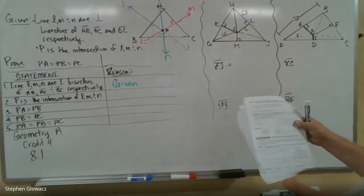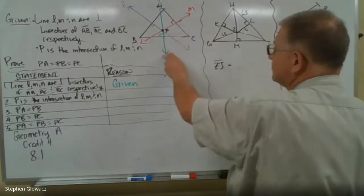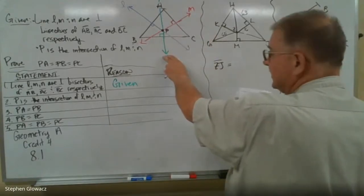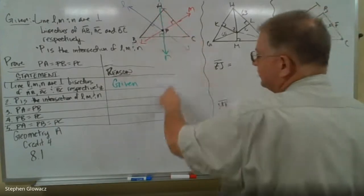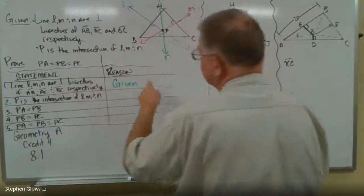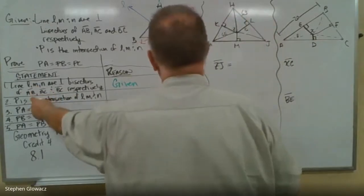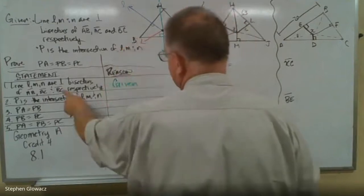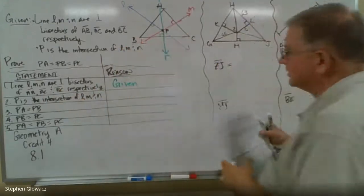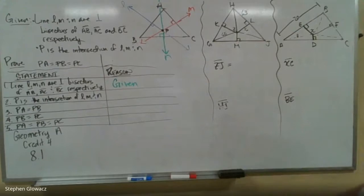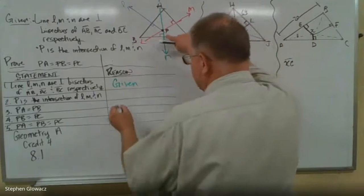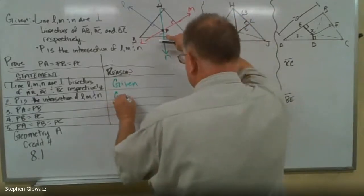Let me just check here. By the way, in your packet, I think these lines are misidentified. Respectively means it goes in order, so L goes through AB which it does, M goes through AC which now does, and then N goes through BC which it now does. Okay, so that is correct. Point P is the intersection of those three lines, of L, M, and N, that is also a given.